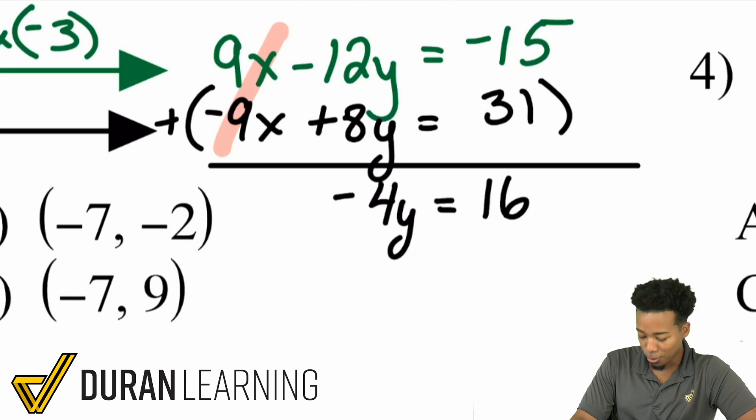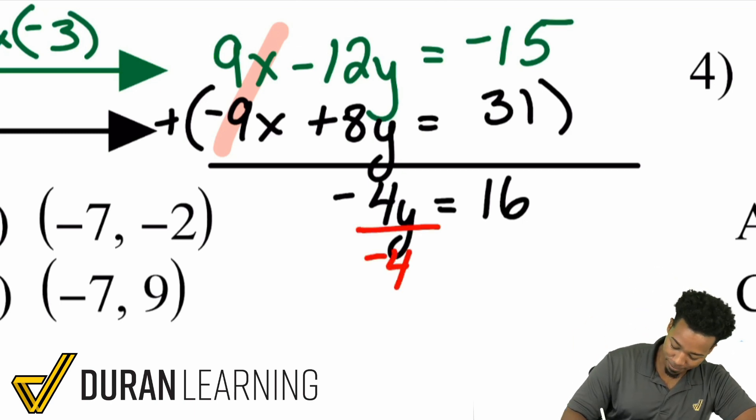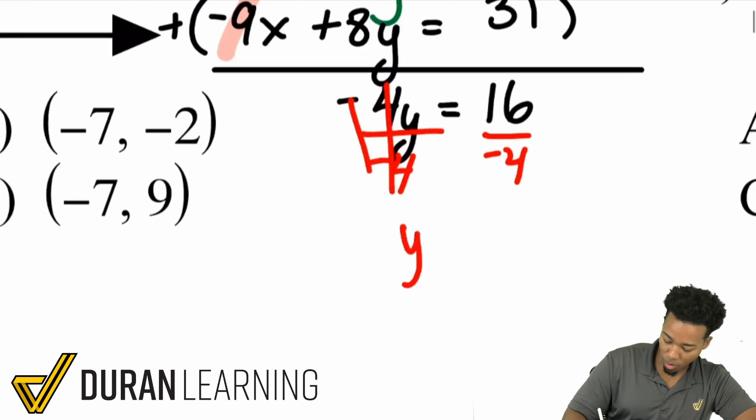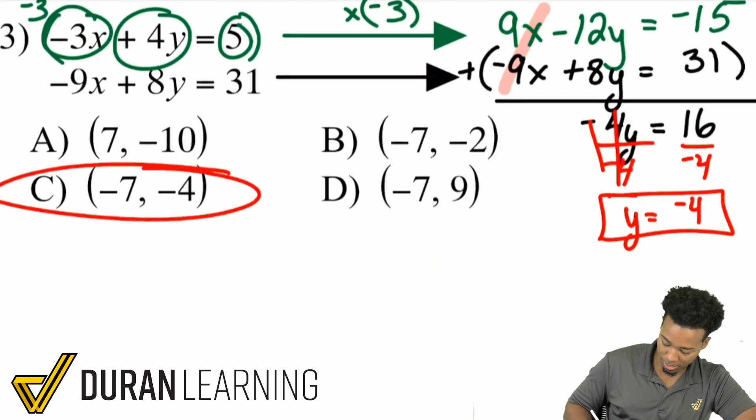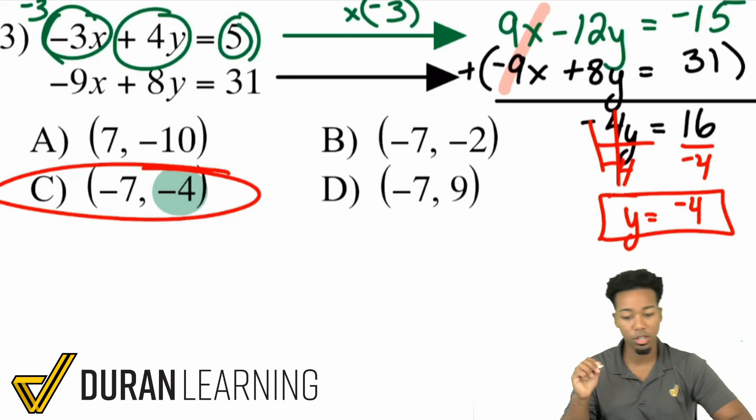Look at that, super straightforward, and now all we have to do is solve for y, and to do that, we divide both sides by that negative 4, and we're good. Booyah, bam, and we have y equals negative 4. Do we have only one of those y's being negative 4? Yep, we do. That's answer choice C, because we're good right there.